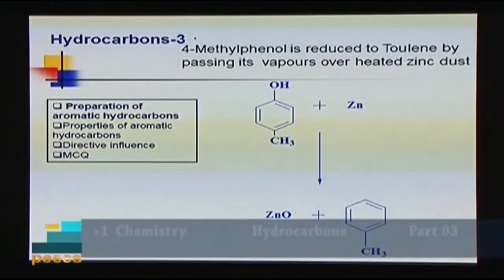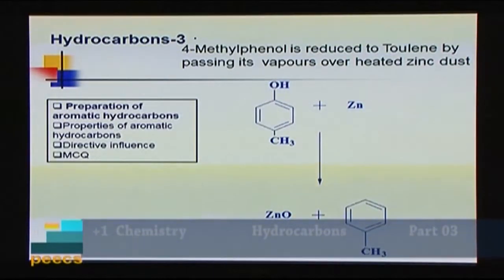These are the methods for preparation of aromatic hydrocarbons: first, decarboxylation of the sodium salt of aromatic carboxylic acid; second, by trimerization of acetylene and its derivatives; and third, by reaction of phenol and other phenol derivatives with zinc.